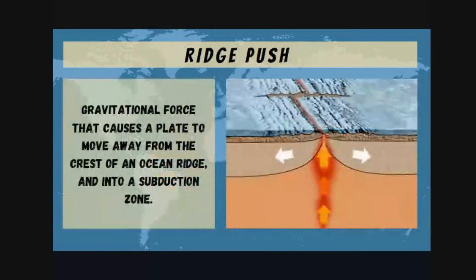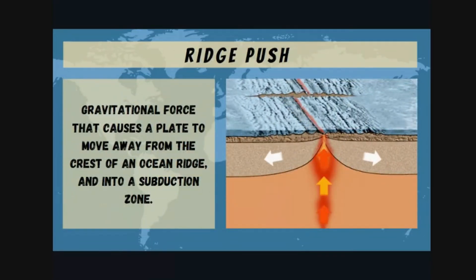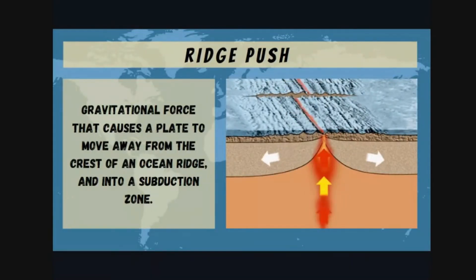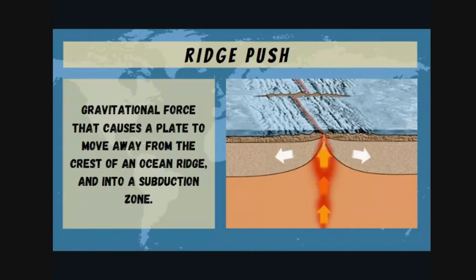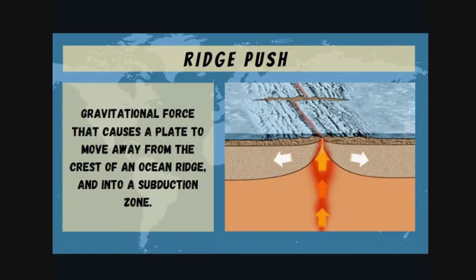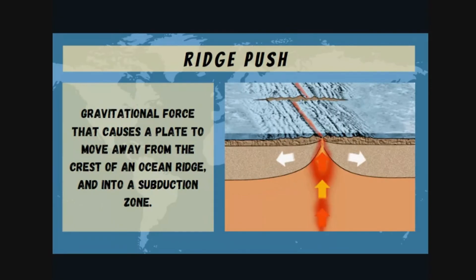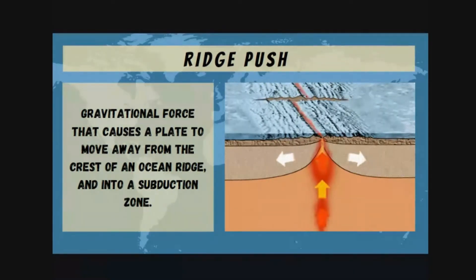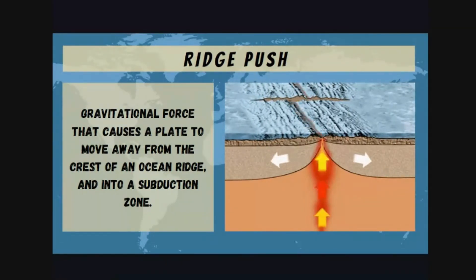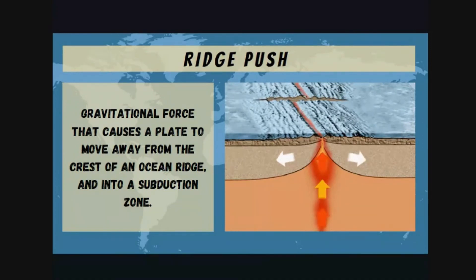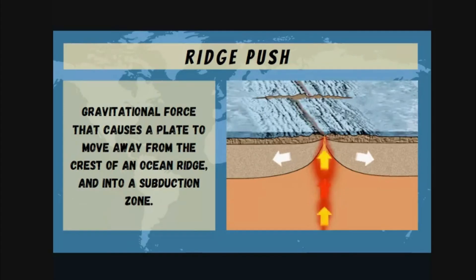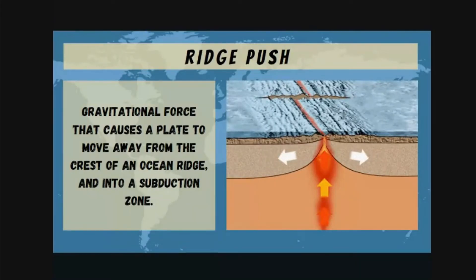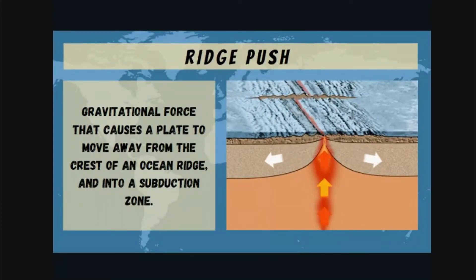First is the ridge push. Ridge push is the gravitational force that causes a plate to move away from the crest of an ocean ridge and into a subduction zone. The heat will move upward until it moves to the divergent boundary. When it reaches the ridge area, the tendency is to push it away towards the subduction zone. That's why it's called ridge push. Ridge push happens at divergent boundaries.